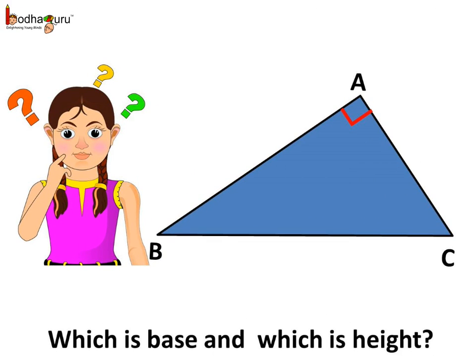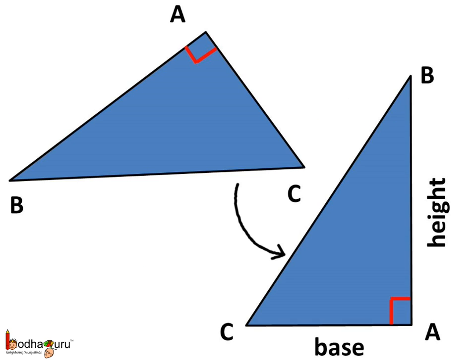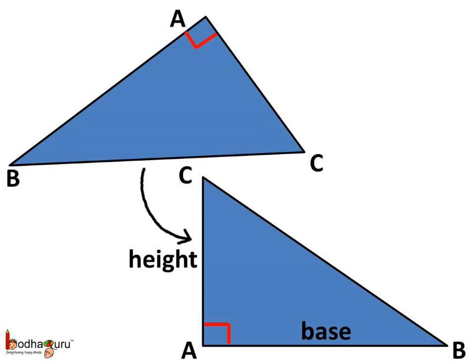Now this is the right angle triangle ABC, and angle A is the right angle. If we rotate this triangle, then what do we see? We see that AC becomes the base and the perpendicular is AB, which becomes the height of this triangle. Now if we rotate the triangle the other way, we see that AB becomes the base now and the perpendicular AC becomes the height.